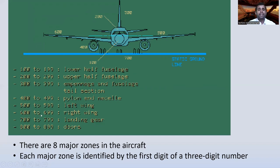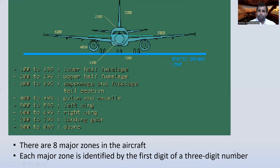Continuing the zones: 600 to 699 is the right wing area, 700 to 799 is landing gear, and 800 to 899 is doors. So the eight major zones are: 100, 200, 300, 400, 500, 600, 700, and 800 zones.